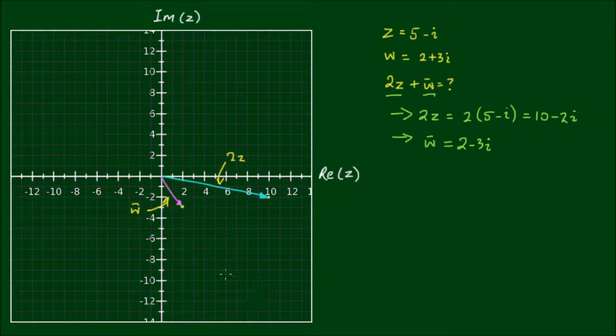And graphically we do this by transposing this vector from the origin to the head of this 2z vector here. So we are linking vectors head to tail, and then finding the resultant vector. So if I drew this transposition with a dotted line, it would look something like this.